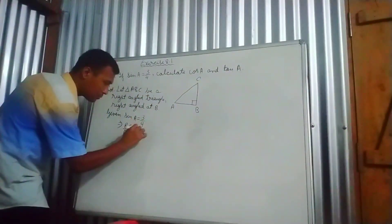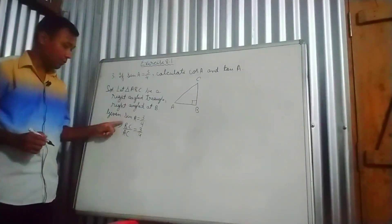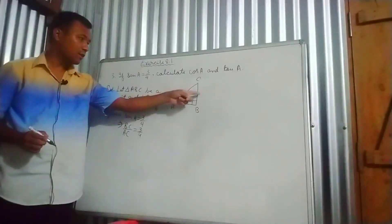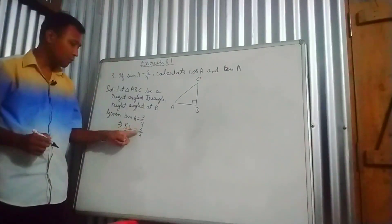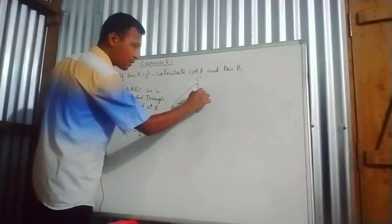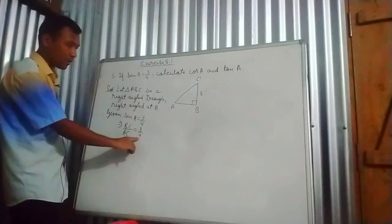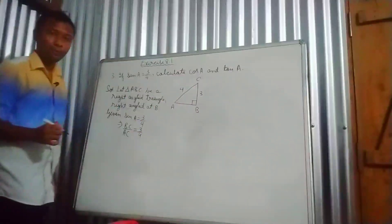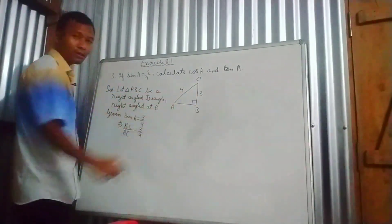On the right side we have 3 by 4. Perpendicular by hypotenuse is BC by AC, which equals 3 by 4. This implies BC divided by 3, so I write here 3, and AC divided by 4, so I write here 4. So perpendicular BC is 3 and hypotenuse AC is 4.